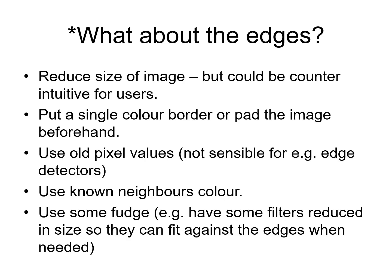For the border we could reduce the size of the image, but this is counterintuitive for users. We could use a single color to indicate the border or pad the image with the correct extra rows and columns beforehand. We could also use the old pixel colors, although this is not sensible for certain filters, or use the nearest known neighbor colors. We could also reduce the size of the filter as we get to the edges of the image.